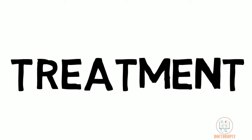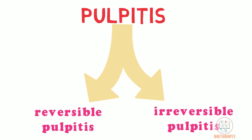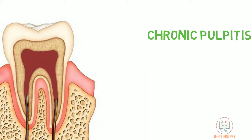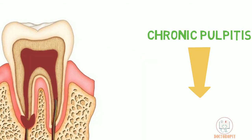Chronic pulpitis is a type of irreversible pulpitis. Therefore, the treatment of choice is pulpectomy. If not treated, the infection enters the periodontal ligament, causing apical periodontitis.